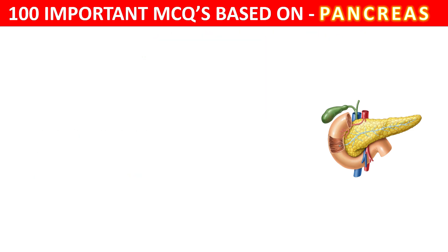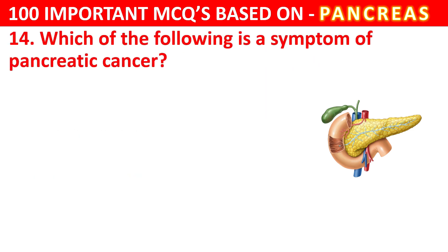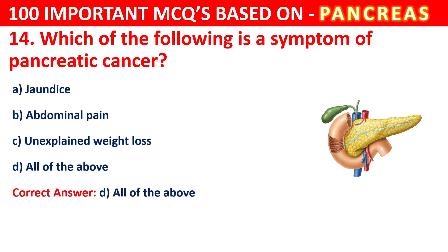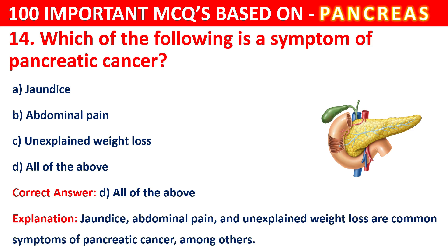Question 14. Which of the following is a symptom of pancreatic cancer? Your options are Jaundice, Abdominal pain, Unexplained weight loss, or All of the above. The correct answer is D, that is All of the above. Jaundice, abdominal pain, and unexplained weight loss are common symptoms of pancreatic cancer, among others.